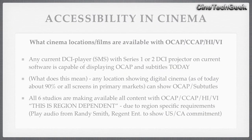Now let's have a look at what locations and films are available in these technologies — open captions, closed captions, HI and VI. Basically any current SMS with a Series 1 or Series 2 projector — any digital cinema today — is capable of displaying open captions and subtitles. Open captions and subtitles are basically the same thing, with open captions sometimes having a bit more descriptive information. Today, if you're a digital cinema you can display open captions and subtitles, meaning about 90% of all screens in the primary markets are already converted.